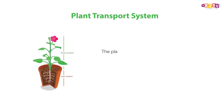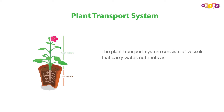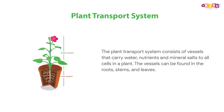The plant transport system consists of vessels that carry water, nutrients, and mineral salts to all cells in a plant. The vessels can be found in the roots, stems, and leaves.